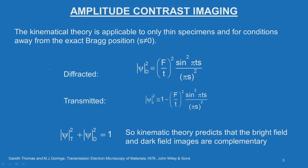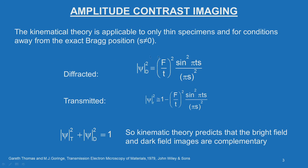The kinematical condition is applicable only to thin foils. The diffracted intensity is given by: Ψ²_D = (F/T)² · sin²(πTs) / (πS)², and the intensity for the transmitted beam is Ψ²_T = 1 − (F/T)² · sin²(πTs) / (πS)². We can simply write Ψ²_T + Ψ²_D = 1.